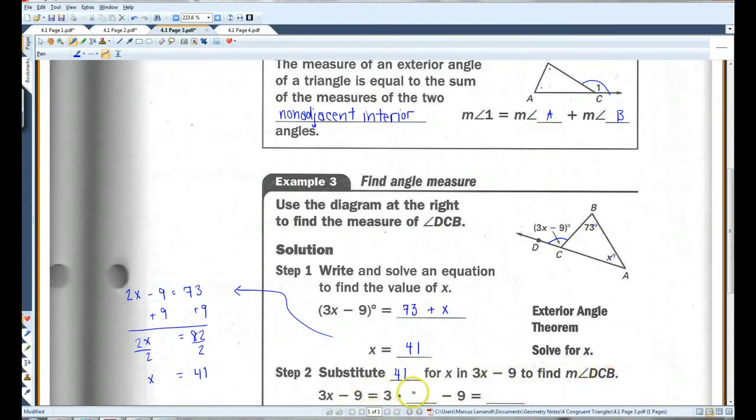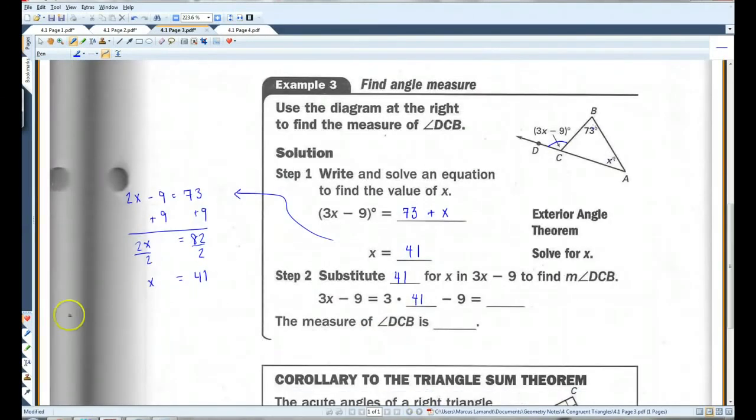So, when I plug this in, I get 3 times 41 minus 9. If you can do that in your head, great. If not, no worries. 41 times 3. 123 minus 9. So, the measure of angle DCB is 114 degrees.